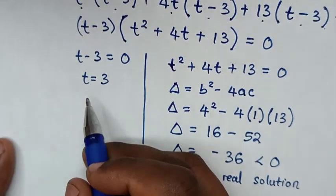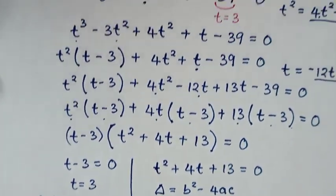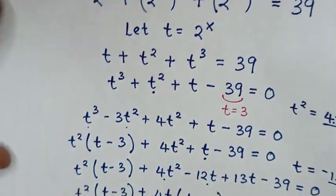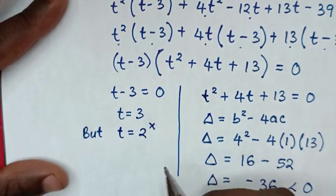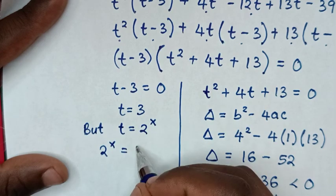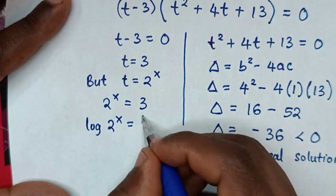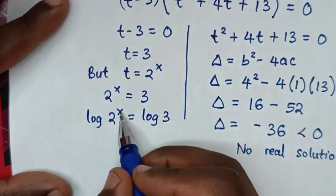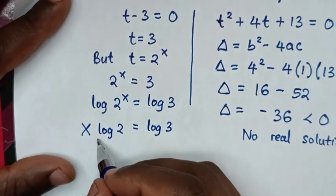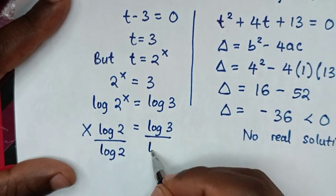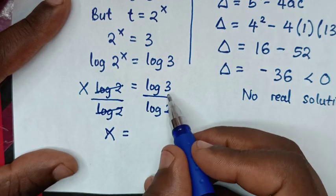We continue with t = 3. To find x, recall we let t = 2^x, so 2^x = 3. Applying log to both sides: log(2^x) = log(3), so x·log(2) = log(3). Dividing both sides by log(2): x = log(3) / log(2).